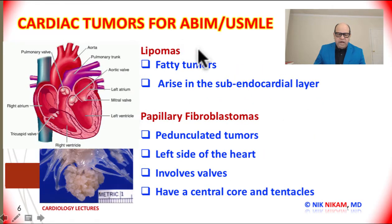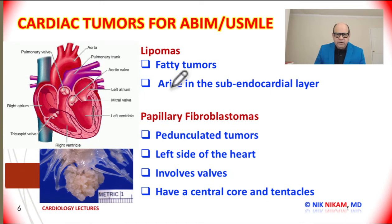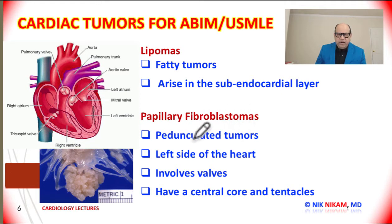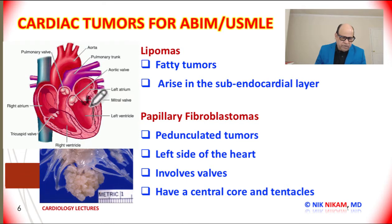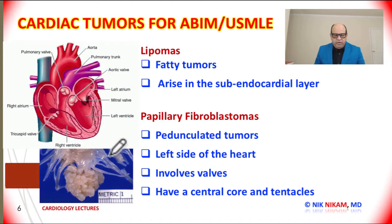Now let us talk about the other two types of tumors mentioned at the beginning. We have the lipomas — as the name indicates, lipomas are fatty tumors which arise in the subendocardial layer of the myocardium. They generally do not cause any problem. The next variety is the papillary fibroelastoma. These are pedunculated tumors that occur more often on the left side of the heart and are in close proximity to the heart valves. As a result, they can interfere with valve function. As you can see in the picture here, it is a pedunculated cauliflower-like mass with tentacles. If there is significant interference with the valve function, these tumors have to be surgically removed.